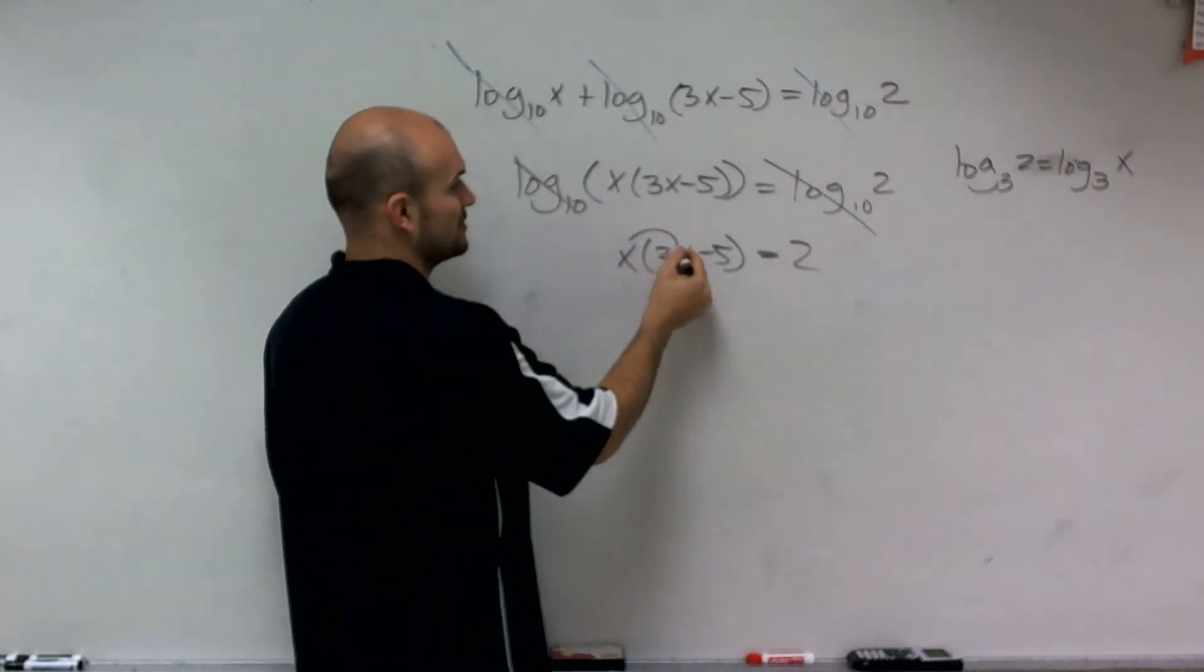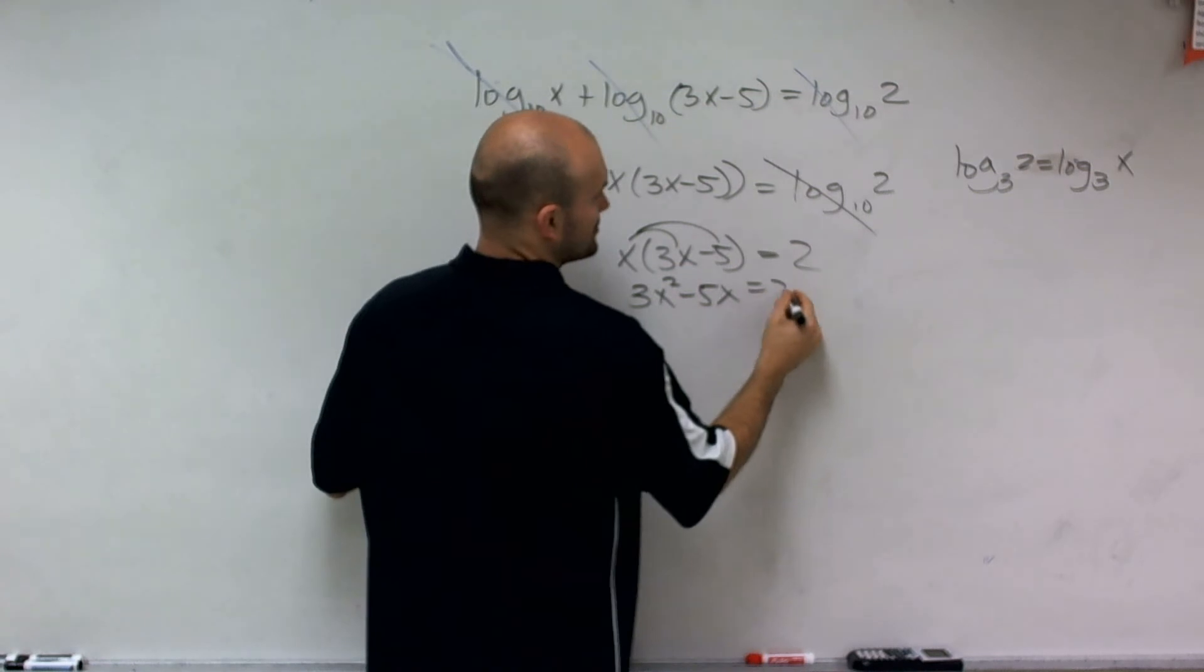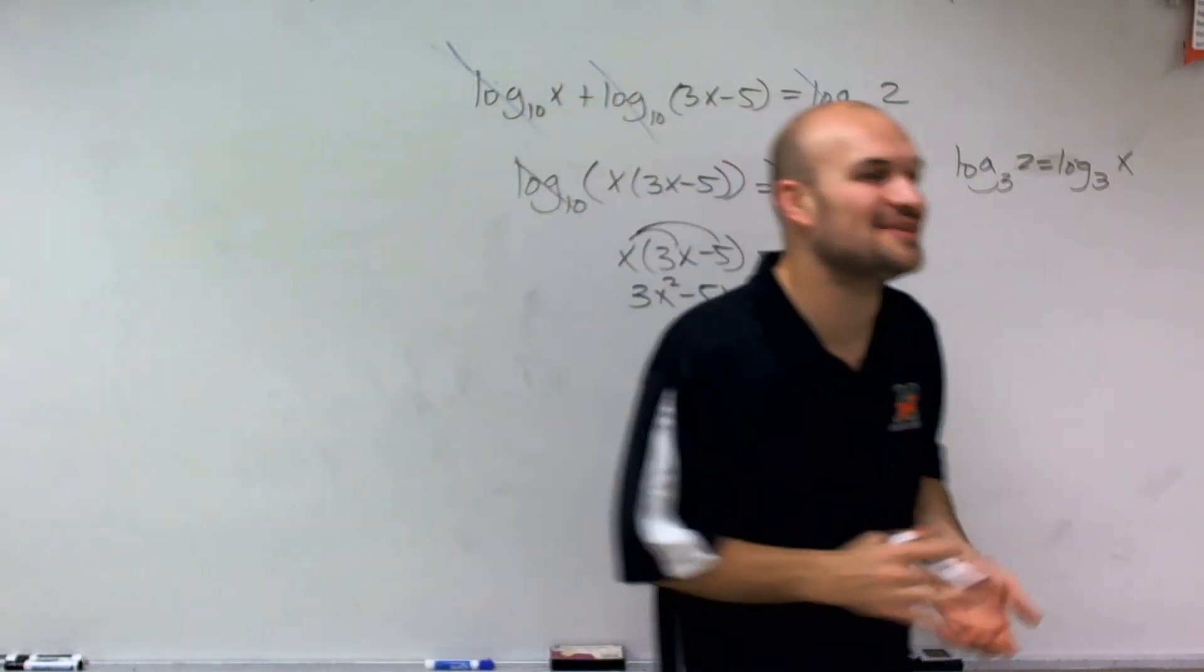So now what I need to do is apply my distributive property, and I get 3x squared minus 5x equals 2. And now I have a lovely quadratic.